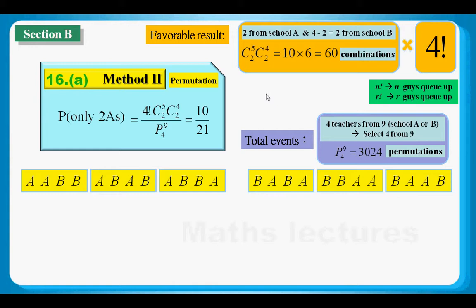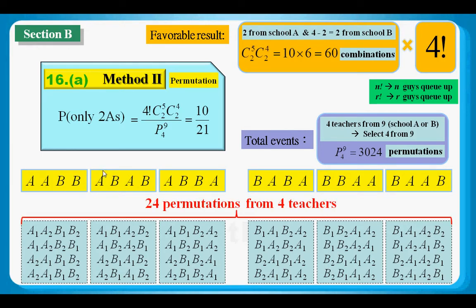Let me show you how to find those 24 permutations. First, I do a first layer of permutations — using 2 A's and 2 B's, I list all the permutations. Then I find the 24 permutations from 4 teachers by labeling each A and B with a small 1 and 2. You may find it difficult at first, but take your time to read through and discuss with your teachers and classmates. Don't rush — this may be the first time you've seen permutations in this way.